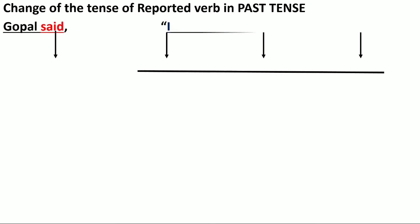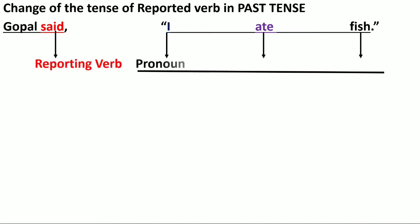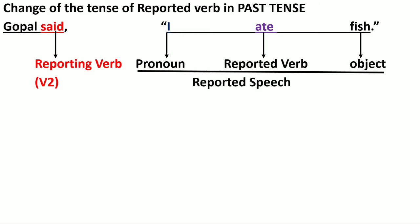Gopal said, 'I ate fish.' Here 'said' is the reporting verb, 'ate' is the reported verb in past tense (V2), and 'fish' is the object. The reporting verb 'said' is in second form. In indirect speech: Gopal said that he had eaten fish.